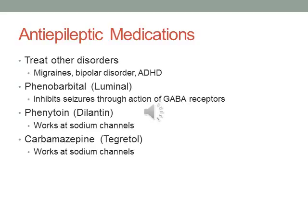When looking at anti-epileptic medications, keep in mind that many of these medications are used to treat other disorders. Don't assume that because you see one of these medications the person has epilepsy — confirm why they're actually taking it. The brand name will be listed in parentheses. Phenobarbital was one of the first widely used anti-seizure medications; it is relatively inexpensive and low in toxicity. It inhibits seizures through the action of GABA receptors — GABA (gamma-aminobutyric acid) is an inhibitory neurotransmitter that helps limit seizure activity.